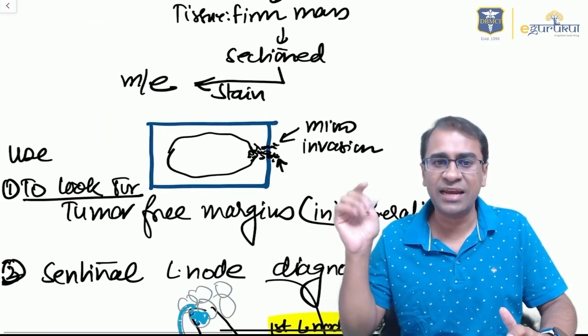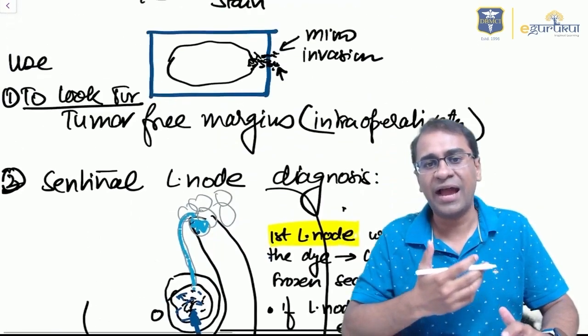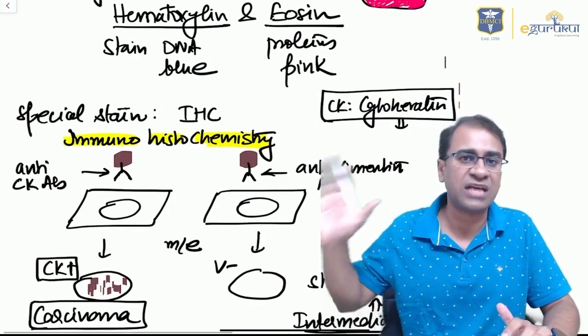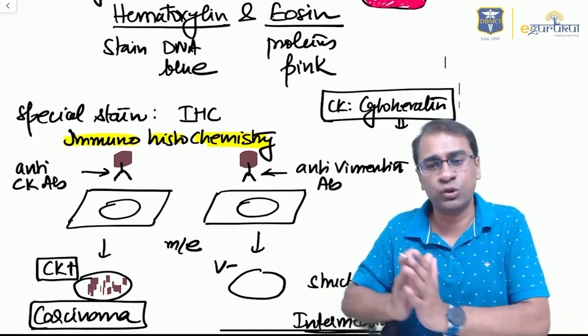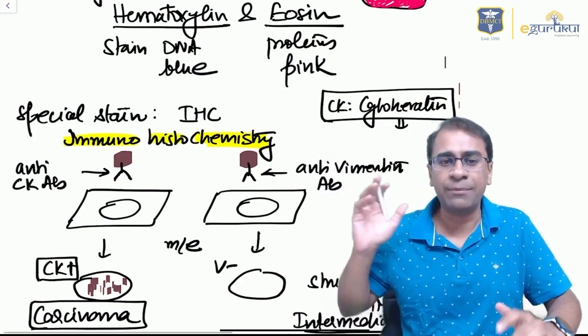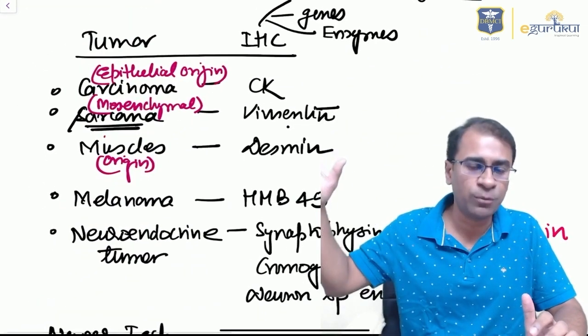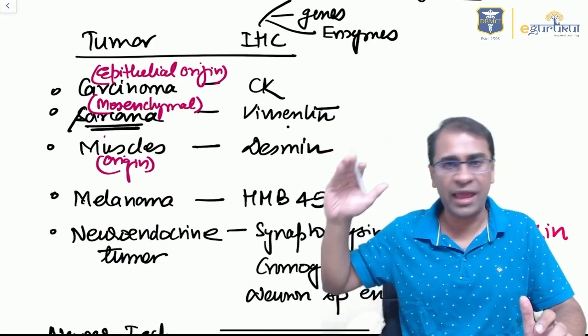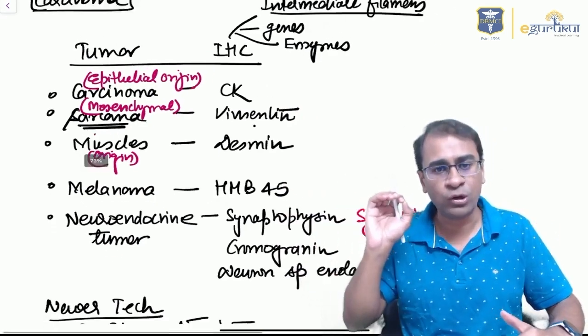You can stain any tissue by H&E stain. A special stain used here is IHC—immunohistochemistry. IHC can be of various types: for carcinoma it's cytokeratin, for sarcoma it's vimentin, for muscle it's desmin, for melanoma it's HMB-45, and don't forget the neuroendocrine tumor, which are synaptophysin, chromogranin, and neuron-specific enolase.